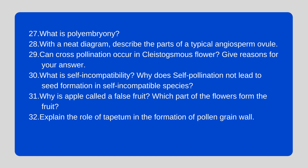With a neat diagram, describe the parts of a typical angiosperm ovule. Can cross-pollination occur in a cleistogamous flower? Give reasons for your answer. What is self-incompatibility? Why does self-pollination not lead to seed formation in self-incompatible species? Why is apple called a false fruit? Which part of the flower forms the fruit?